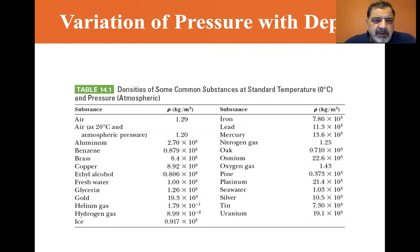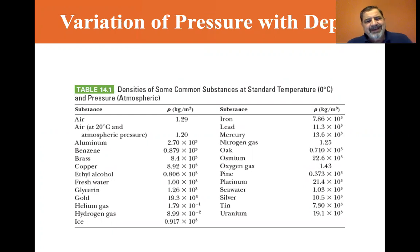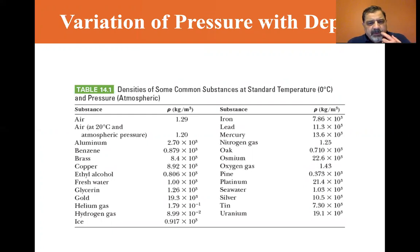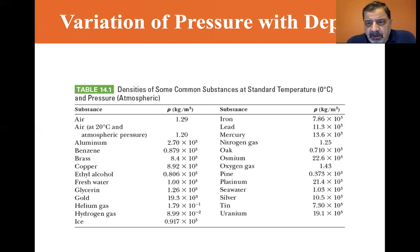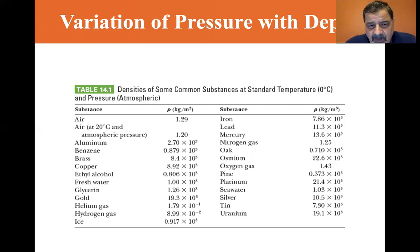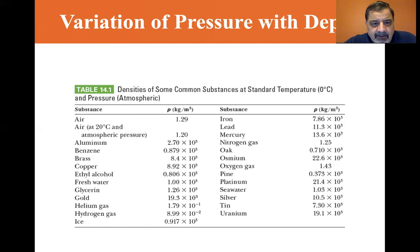We can see that the density of air is 1.29. At 20°C, closer to room temperature, it's 1.2. Oxygen gas is 1.43, and nitrogen gas is 1.25. Those values are times 10 to the zero, so the order of magnitude is 1.